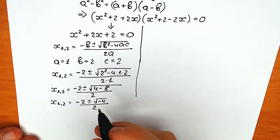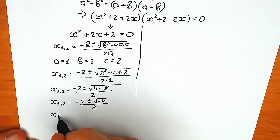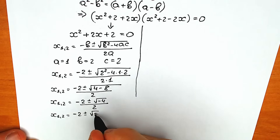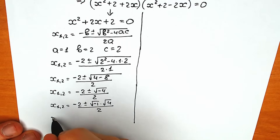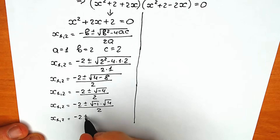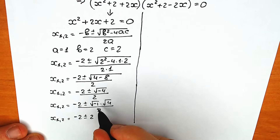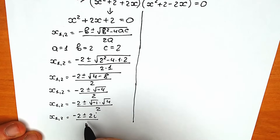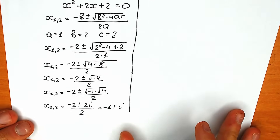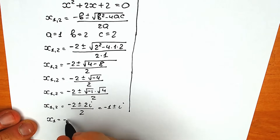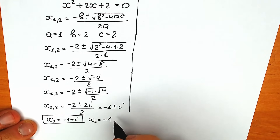We can split the square root of negative 4 as square root of negative 1 times square root of 4. Square root of 4 equals 2, and square root of negative 1 is the imaginary unit i. So we have minus 2 plus or minus 2i, divided by 2. Dividing the numerator by 2: x₁ equals minus 1 plus i, and x₂ equals minus 1 minus i.